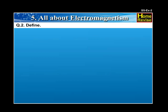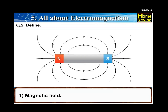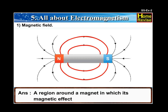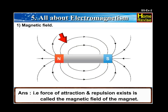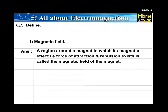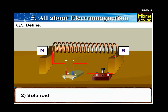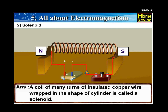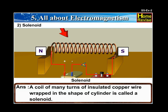Question 2. Define. 1. Magnetic field. Answer: A region around a magnet in which its magnetic effect — that is, force of attraction and repulsion — exists is called the magnetic field of the magnet. 2. Solenoid: A coil of many turns of insulated copper wire wrapped in the shape of a cylinder is called a solenoid.